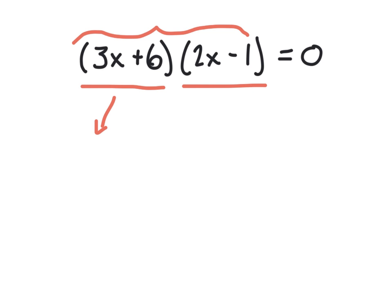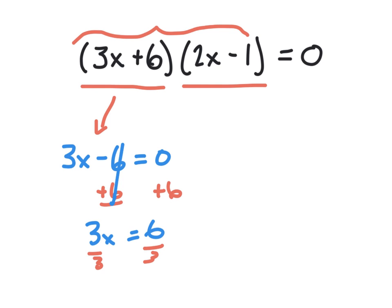And our strategy is going to be simply to write down the first one, set it equal to zero, and then use our usual inverse operations to solve the linear equation. I'm going to add 6 to both sides. I'll cross this out, and this is 3x equals 6. And if I divide by 3, I find out that x equals 2 is one of the solutions.